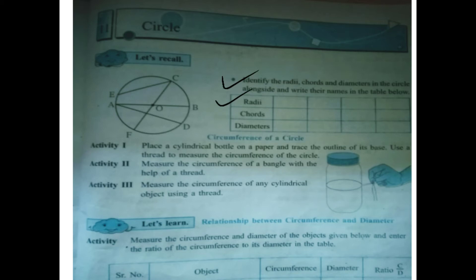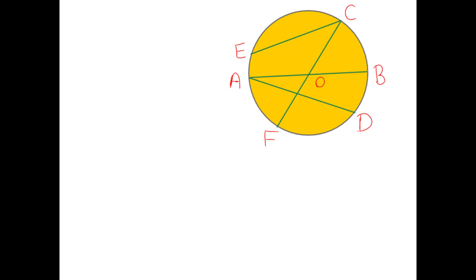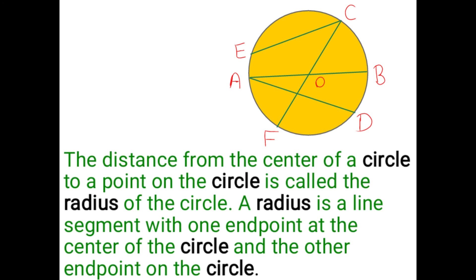First we will do radii. Radii is the plural form of the word radius. Look at this figure. What is called the radius of the circle? Take down this definition: the distance from the center of a circle to a point on the circle is called the radius of the circle. A radius is a line segment with one endpoint at the center of the circle and the other endpoint on the circle.